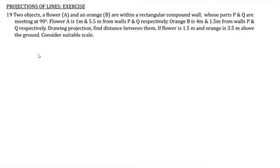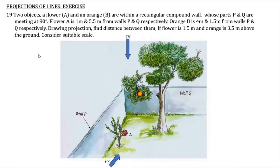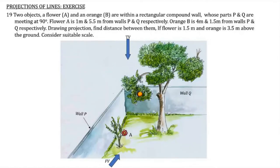We have to find out the true length of the line joining the flower and the orange. Visually it will appear like this — walls P and Q form a corner, flower A is at one position and orange B is at another. The dimensions to locate A and B in both the front view and top view are given. The important part is how to convert this into an engineering graphics problem.